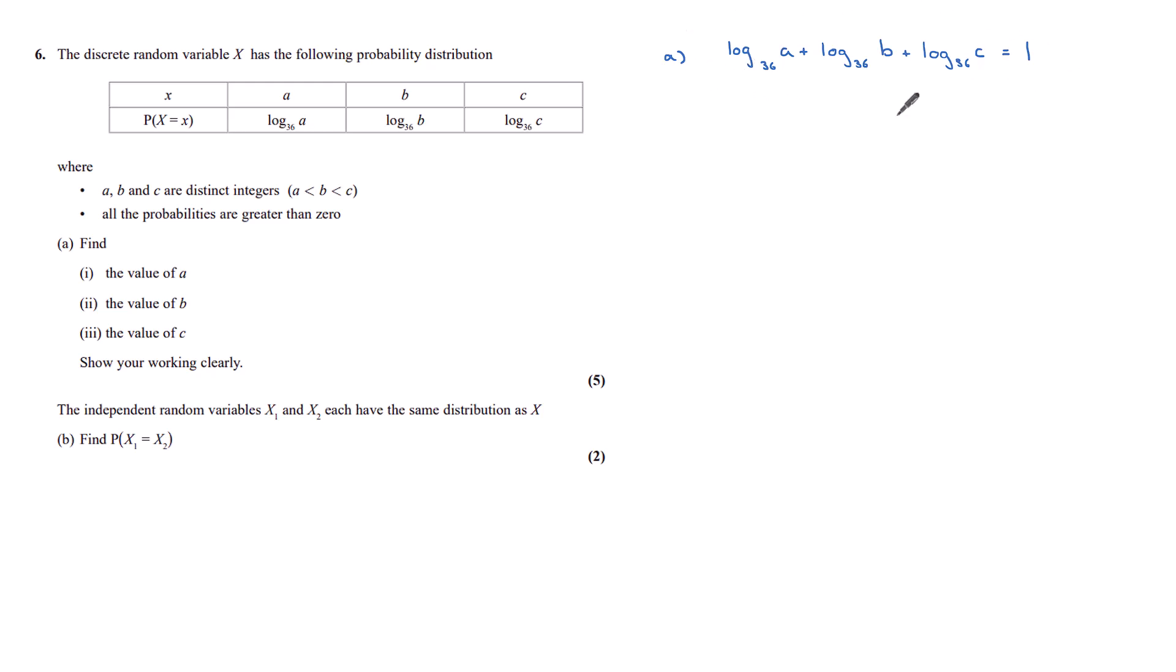So starting from this point, let's now use our log rules. These are all log base 36. So if we're adding them all together, it is the same as multiplying these. So log base 36 abc is equal to 1, which means abc is equal to 36 to the power 1, which of course is 36. So a, b, c must each be factors of 36.